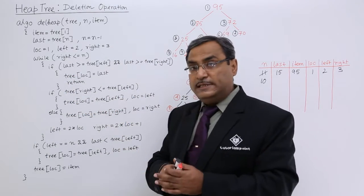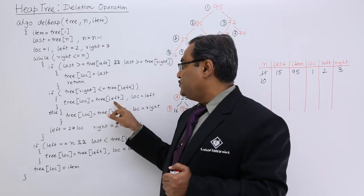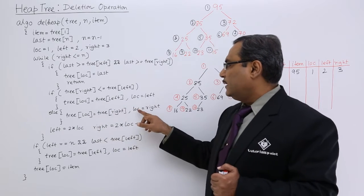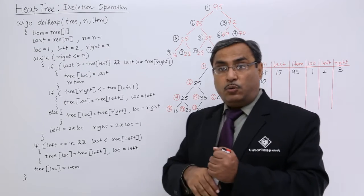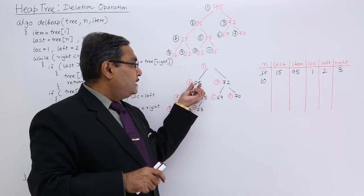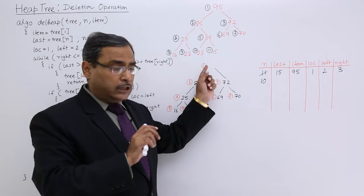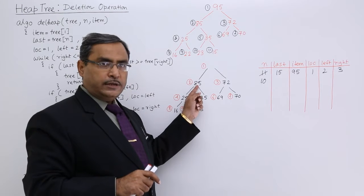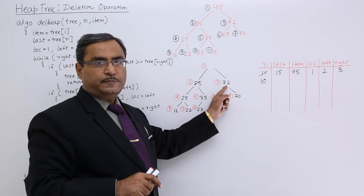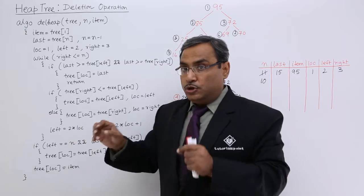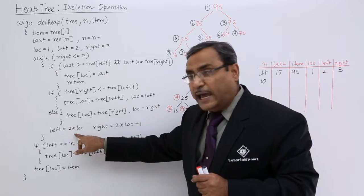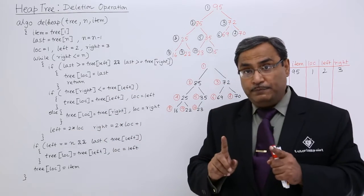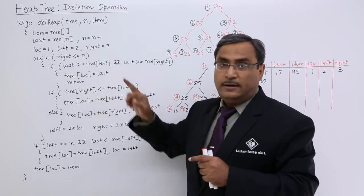If tree[right] is less than tree[left], meaning the left child has the higher value, then the left child moves into the free space and the free space shifts down to the left child's position. Otherwise, the right child moves into the free space and loc shifts down to the right child's position. After loc changes, left is recalculated as 2*loc and right as 2*loc+1, and the while loop continues while right ≤ n.